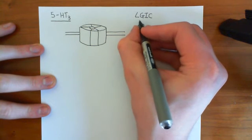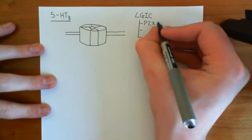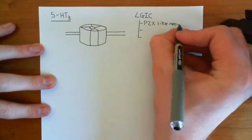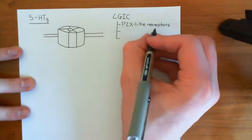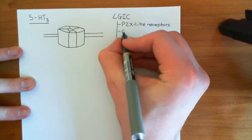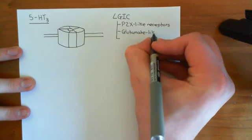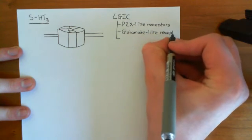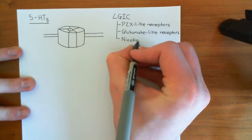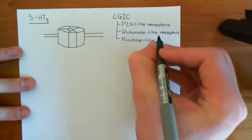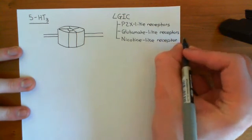Within the family of ligand-gated ion channels, there are three major superfamilies. The first is the P2X-like receptors, which contains receptors such as the P2X receptors. Then there are the glutamate-like receptors, which contain the ionotropic glutamate receptors — the AMPA, the kainate, and the NMDA receptors. And finally, there is the nicotine-like receptor family, which contains the nicotinic acetylcholine receptors, the GABA-A receptors, and also the 5-HT3 receptors.